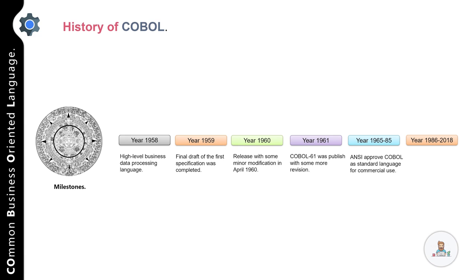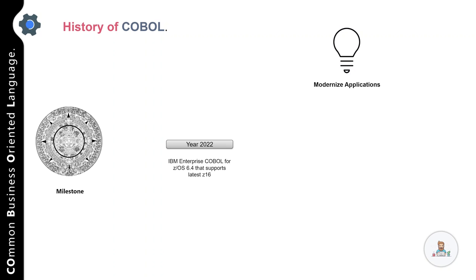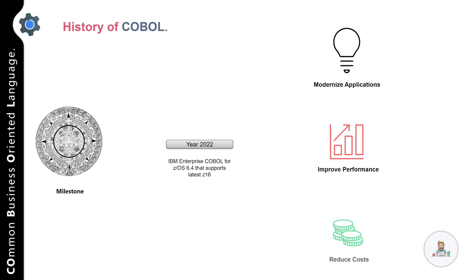In May 1961, COBOL 61 was published with minor revisions, providing the foundation for later versions. In 1965, a revised version with additional features was released. In 1968, COBOL was approved by ANSI as a standard language for commercial use — known as COBOL 68. From 1968 to 1985, multiple versions were released with additional features. Multiple compiler versions followed between 1986 and 2018, adding object-oriented programming and web support. As of May 2022, the latest version is IBM Enterprise COBOL 6.4 for z/OS, supporting the latest z16 architecture with improved developer productivity, performance, modularity, and maintainability.